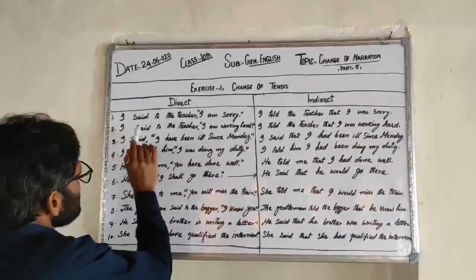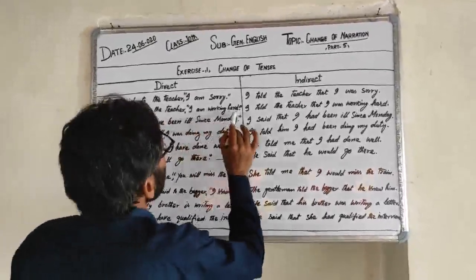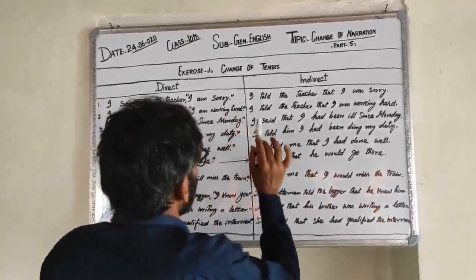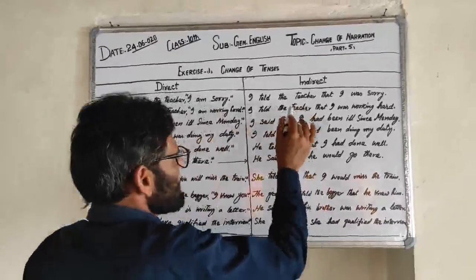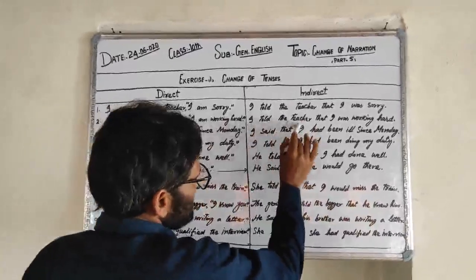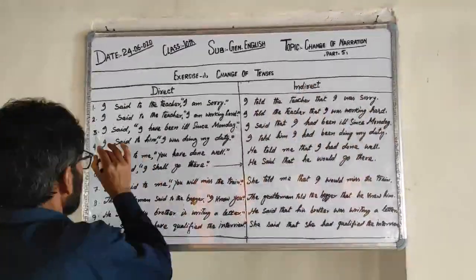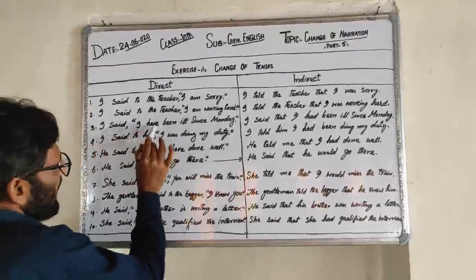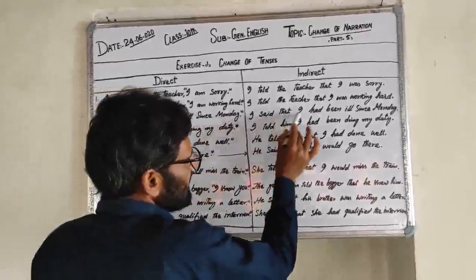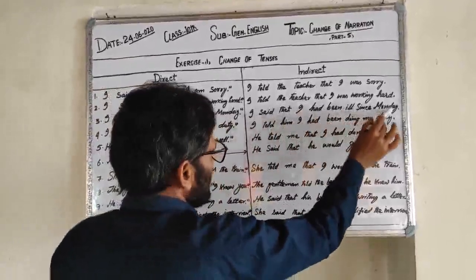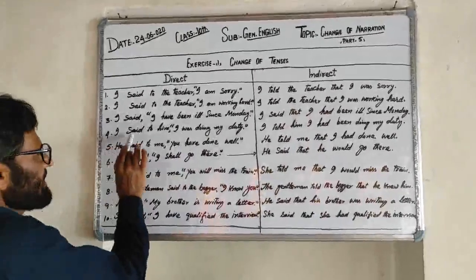Sentence 2: I said to the teacher I am working hard → I told the teacher that I was working hard. Sentence 3: I said I have been ill since Monday → I said that I had been ill since Monday.